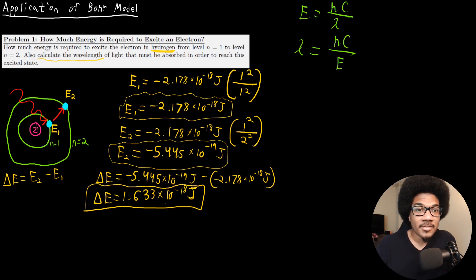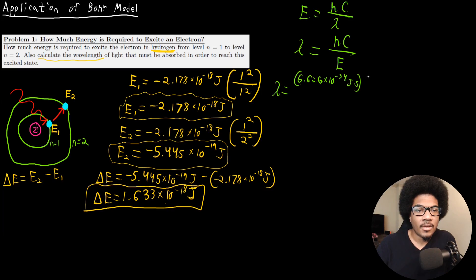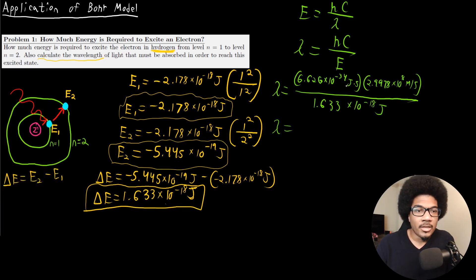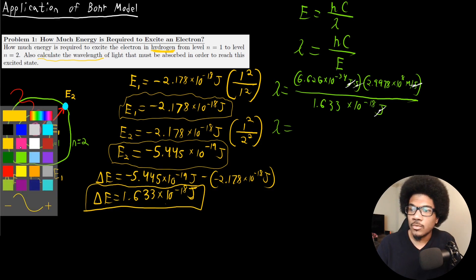From here, we just plug in — Planck's constant and the speed of light are both constants, and the energy is the energy necessary to cause this excitation. So lambda equals 6.626 times 10 to the negative 34 joule·seconds, times 2.9978 times 10 to the 8 meters per second, divided by 1.633 times 10 to the negative 18 joules. Looking at how the units work out: joules cancel in the numerator and denominator, seconds in Planck's constant and per second in the speed of light cancel, leaving just meters.